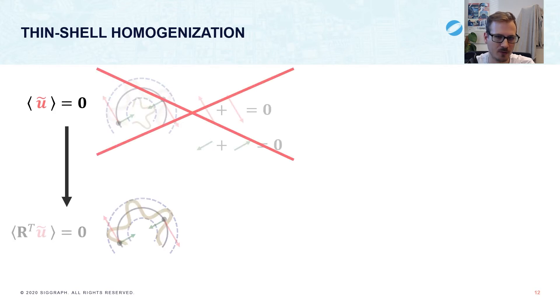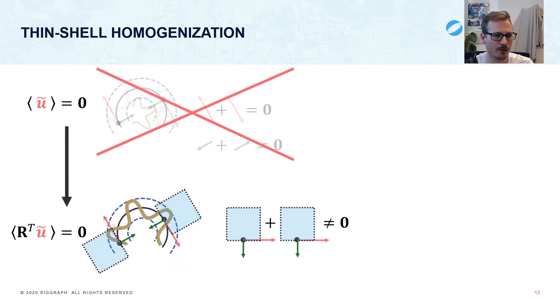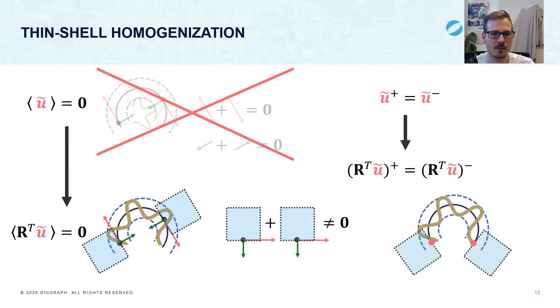So we somehow have to account for the curvature in the average. And indeed, by considering fluctuations relative to a rotational surface-aligned frame, we can first align the frames before averaging to avoid these issues. A similar treatment for periodicity leads to our co-rotational periodic boundary conditions. And so the deformation on the boundary is constrained to be periodic within the local frames.